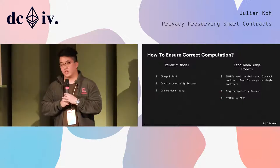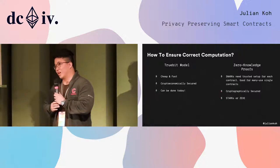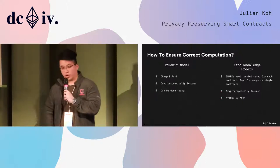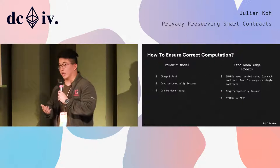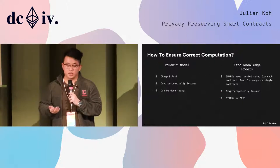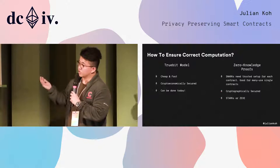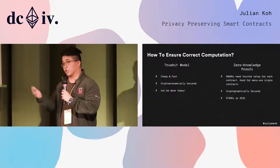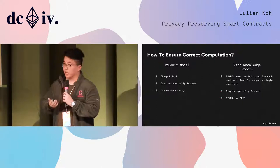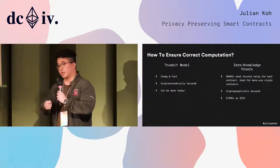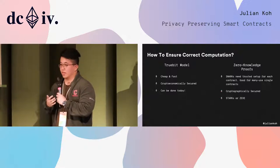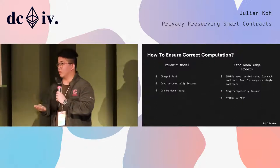There are two ways of doing this. One is the TrueBit model — it's easy to do today, doesn't use much cryptography, and is more about economically guaranteeing that people do correct computations. The more interesting approach is using zero-knowledge proofs so that nodes can run a computation, submit a proof to the smart contract that they ran the right one, and there's a mathematical guarantee that they did.